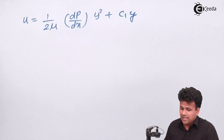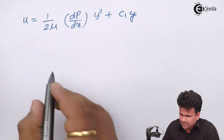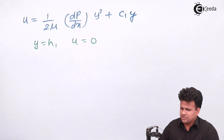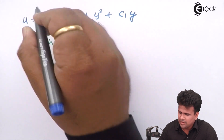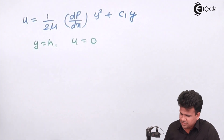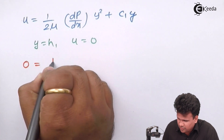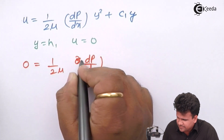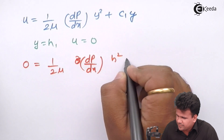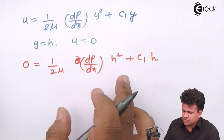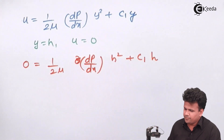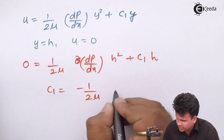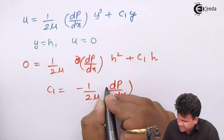Next, we substitute the second boundary condition: when y = h, u = 0. Substituting into the equation gives 0 = (1/2μ)(dp/dx) · h² + c₁·h. Dividing through by h, we get c₁ = −(1/2μ)(dp/dx) · h.